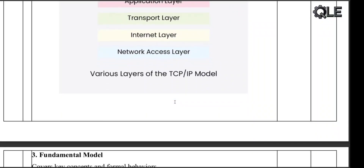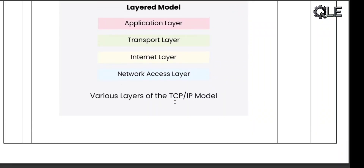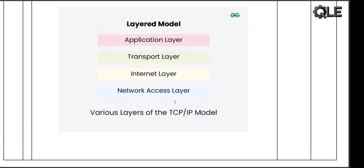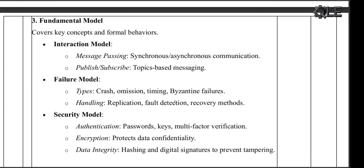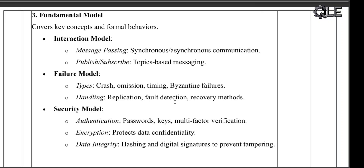Finally, the fundamental model covers how the system behaves and how we deal with things like failures and security. It includes three sub-models. The interaction model defines how communication happens: message passing can be synchronous — waits for a reply — or asynchronous — no waiting. Publish-subscribe: a node sends messages to topics and other nodes subscribe to those topics.